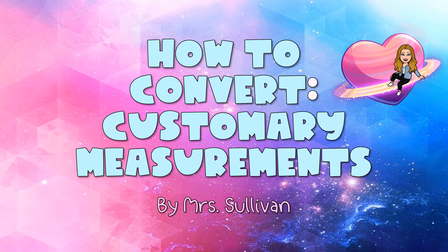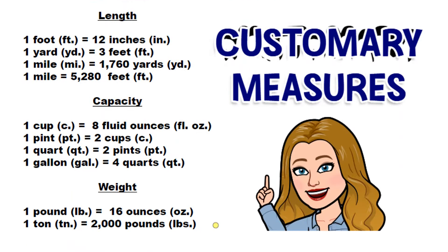One key component of customary measures and conversions is to have a conversion chart handy whenever you're doing these calculations. I provided one for you here and I'll provide the same one for your assignment today. Generally speaking, a customary conversion chart looks like this: one foot equals 12 inches; capacity — a cup is eight fluid ounces; and weight — one pound equals 16 ounces, and so forth.